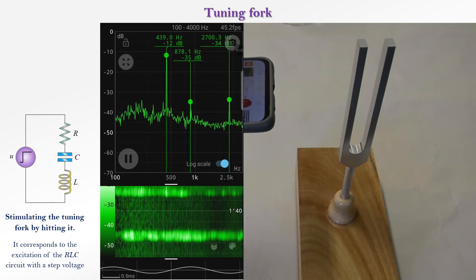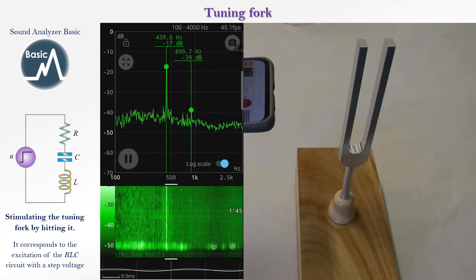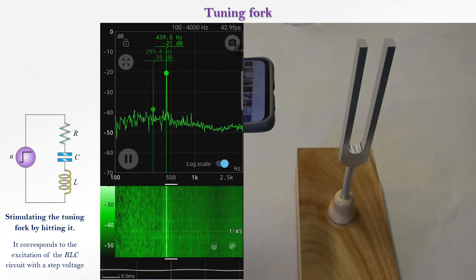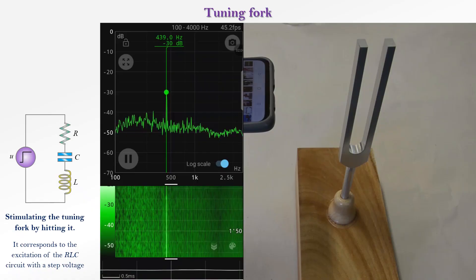By hitting the shown tuning fork, it vibrates at its natural frequency and produces sound waves with a frequency of 439 Hertz. Because the damping is small, the tuning fork vibrates for many seconds.